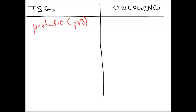We want tumor suppressor genes in general to be active because they are protective. When it comes to oncogenes, oncogenes promote cancer. When these genes express their oncoproteins, those proteins cause cancer to be more likely. This is a head-scratcher — you might ask why we would even have genes in our genome that cause cancer in the first place.